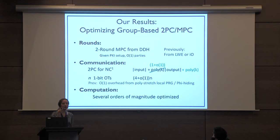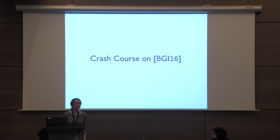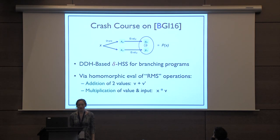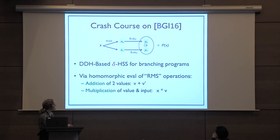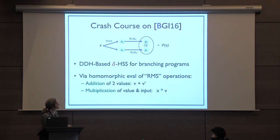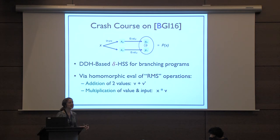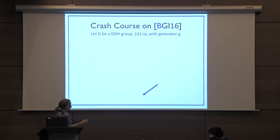To give a flavor of each direction I'll start with a crash course on the Crypto paper. We gave a DDH-based construction of Delta-HSS for the class of branching programs by supporting two homomorphic evaluation procedures: addition of two values, and a restricted form of multiplication — RMS multiplication (restricted multiplication straight-line). This allows multiplying any intermediate computation value V by an input. It doesn't allow multiplying two intermediate values, but together these operations suffice for branching programs.